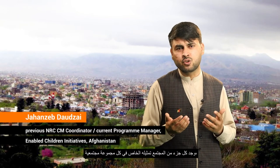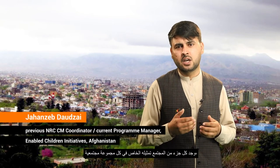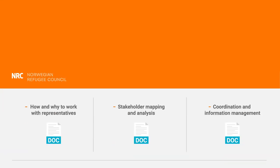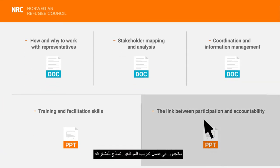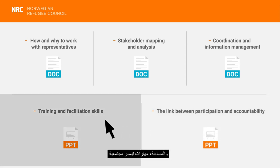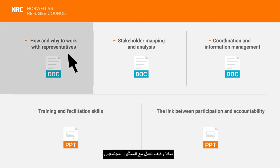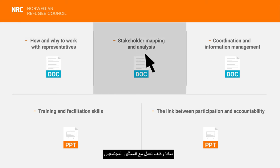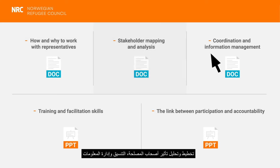Each part of the community found their own representation in each community group and individuals got a stronger voice. In the staff training chapter, there are modules on participation and accountability, community facilitation skills, how and why to work with representatives, community stakeholder mapping and analysis, and coordination and information management.